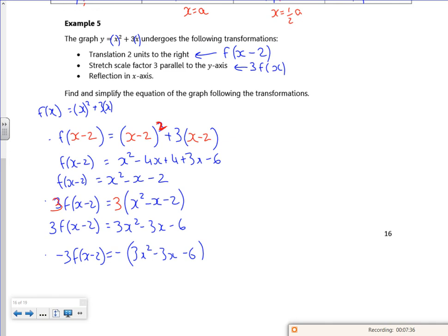So minus three lots of f of x minus two is minus three x squared plus three x plus six. Don't worry we'll do plenty of examples, this is dead hard. See you later, bye bye.